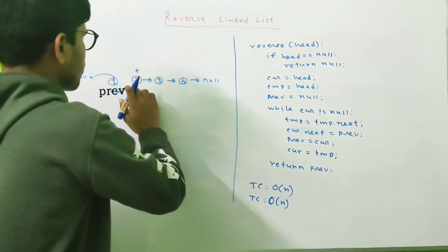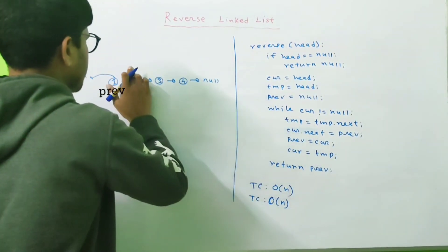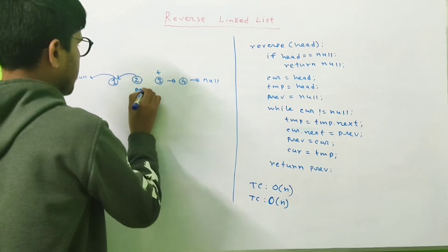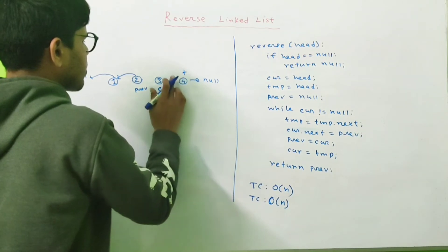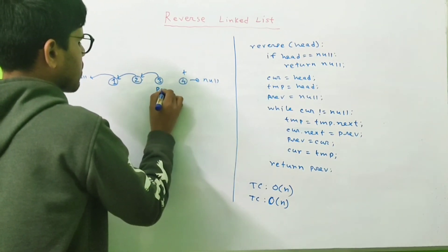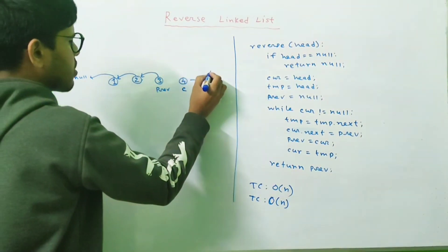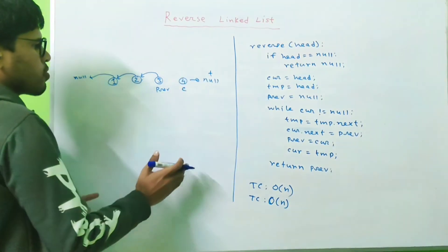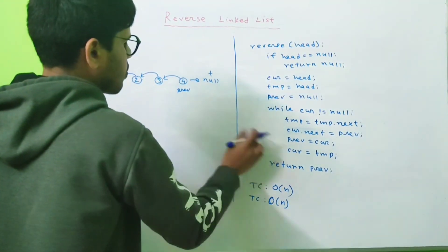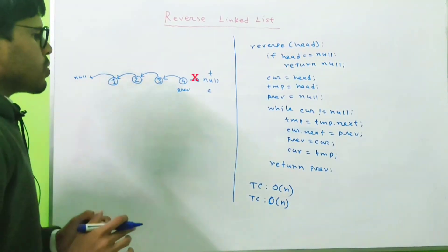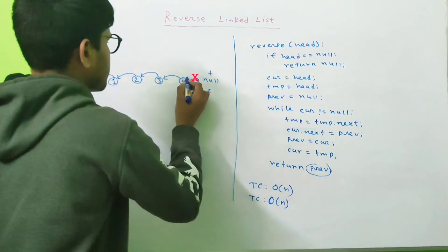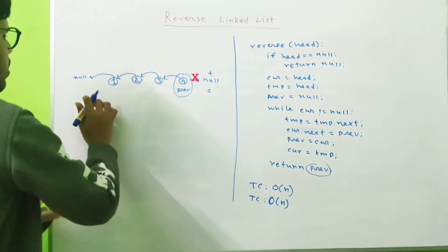Current is not null — we're at node 2 — so we move temp to the next node, disconnect and connect it to the previous node, then move prev to current and current to temp. We repeat: move temp to the next, connect current.next to prev, move prev to current and current to temp. Now temp points to null. We connect current.next to prev, move prev to current and current to temp. Current is now pointing to null, so the loop stops and we return prev.